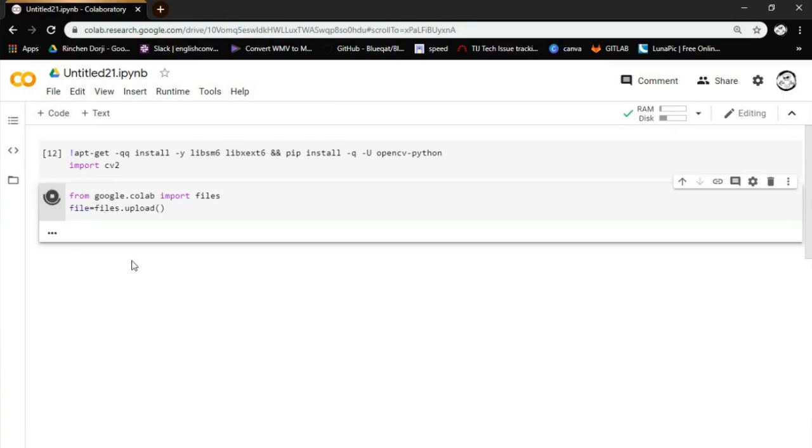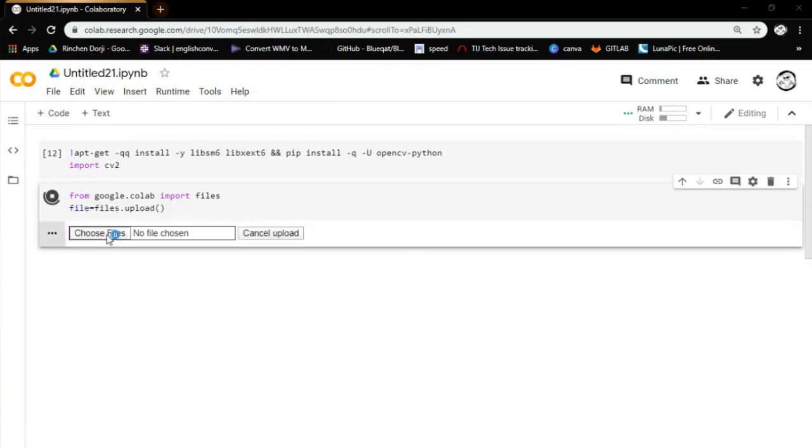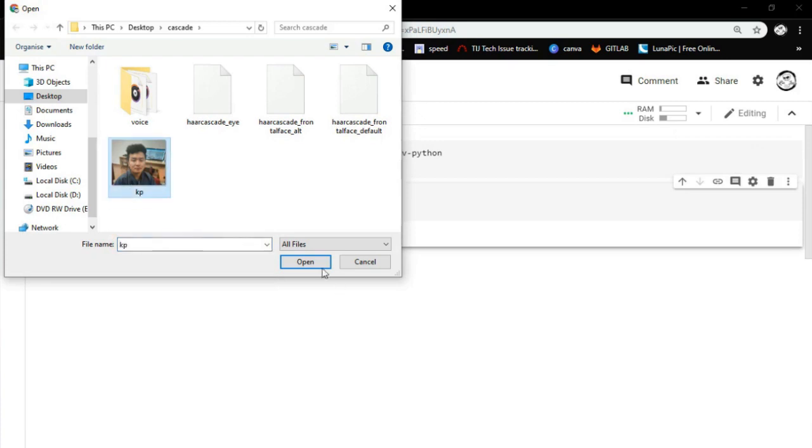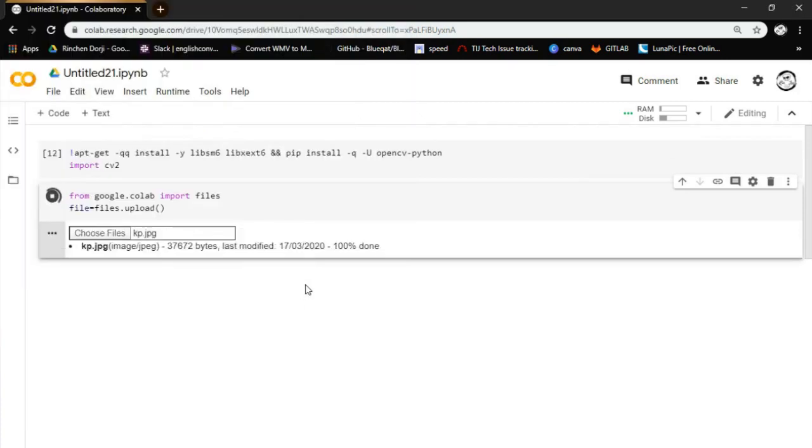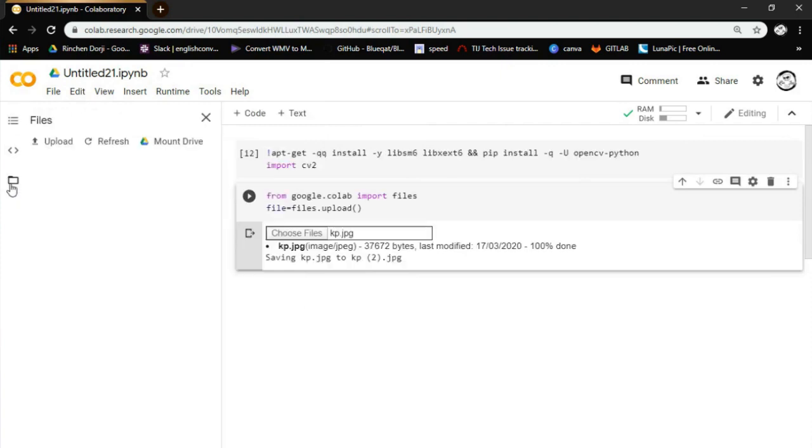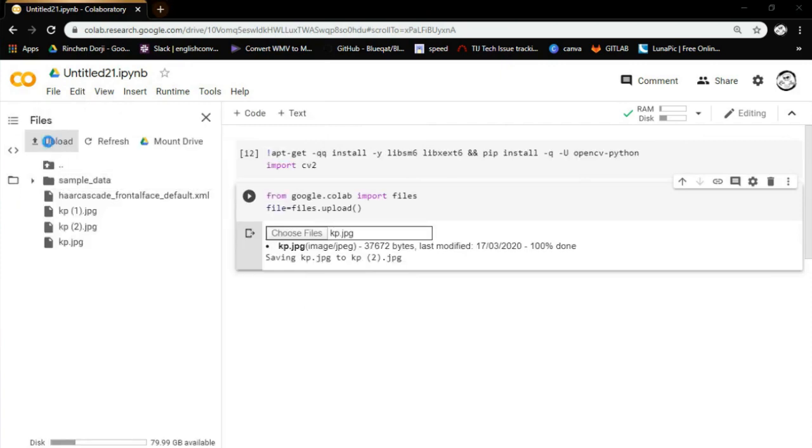Since we are detecting frontal face, we need haar feature-based cascade classifiers and an image. There are two ways to upload a file: one is by this code, and the second is clicking on the file icon and uploading the required file.